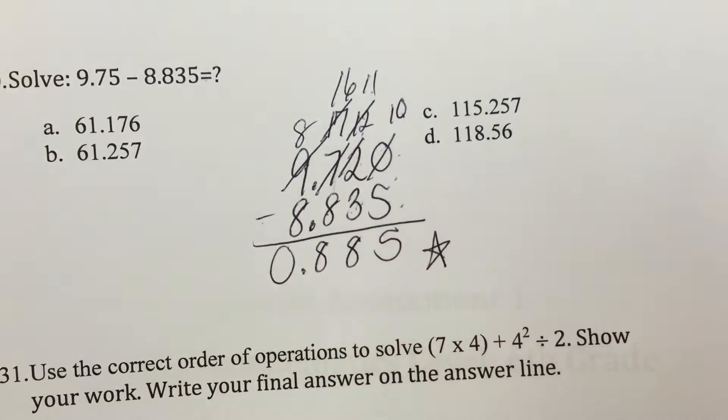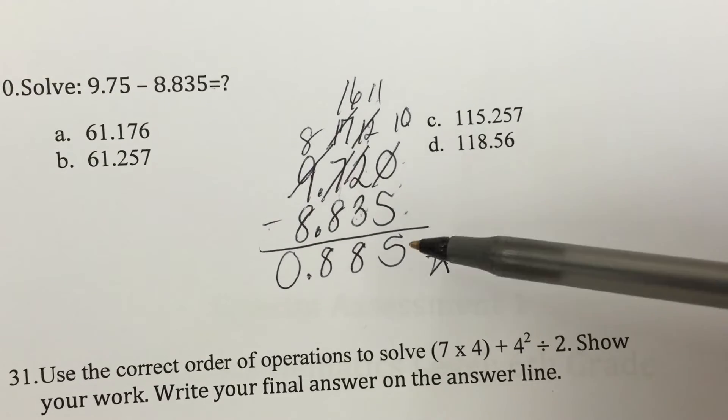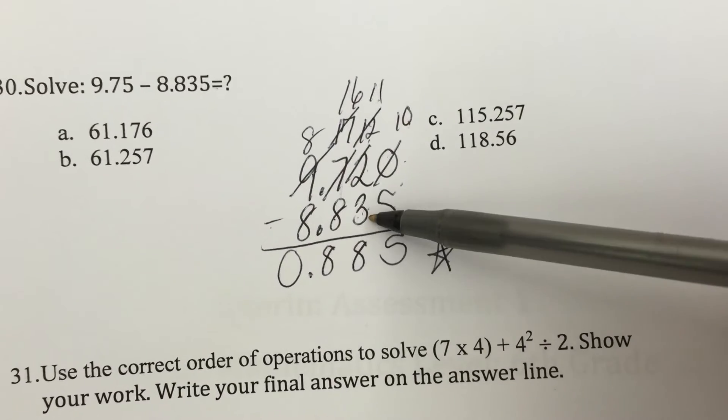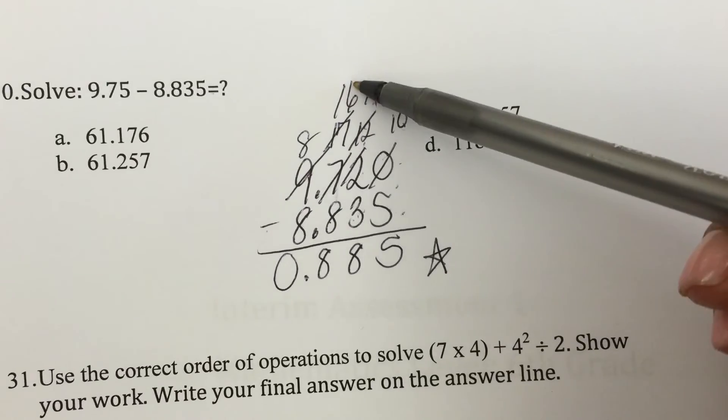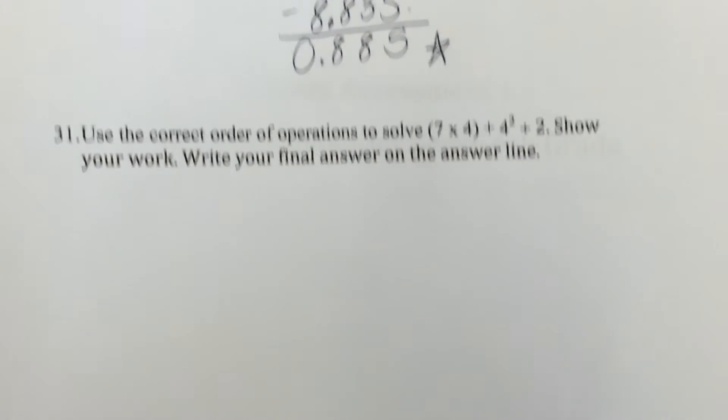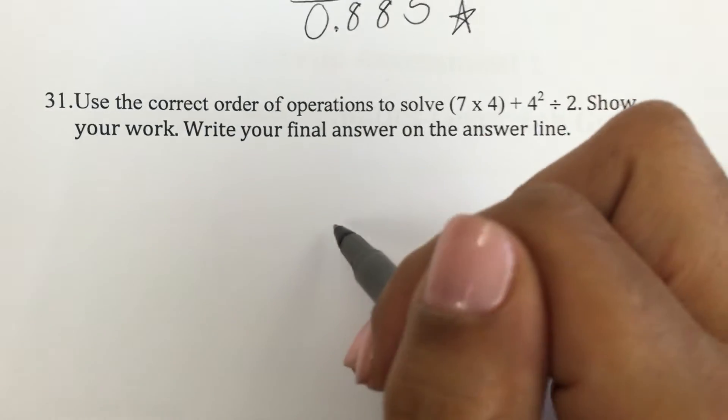And just have to show your work for this one, because none of the choices matched. But I can even check my work. 5 plus 5 is 10. 8 plus 3 is 11. 8 plus 8 is 16. 0 plus 8 is 8. And I know I'm right. And the last one, using order of operations.